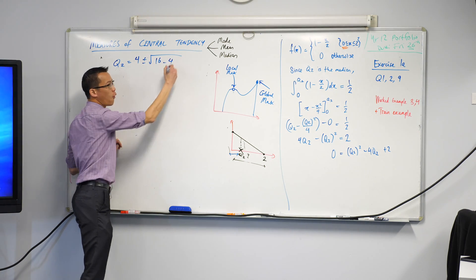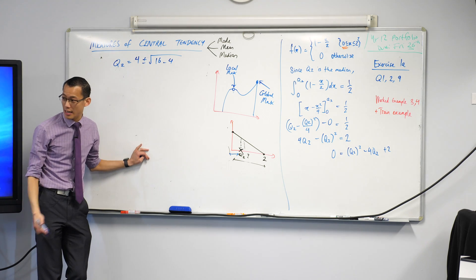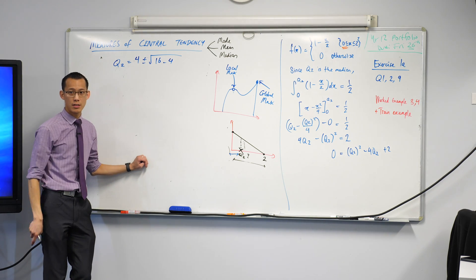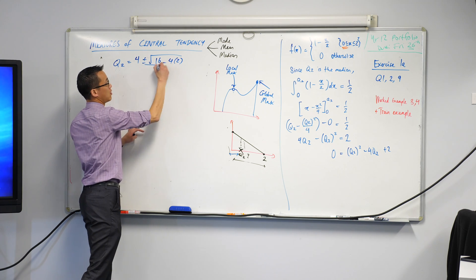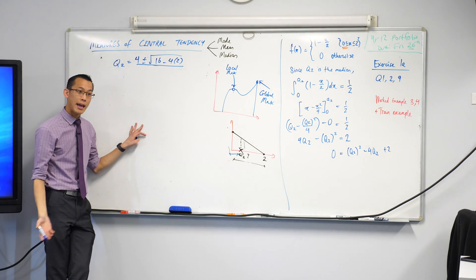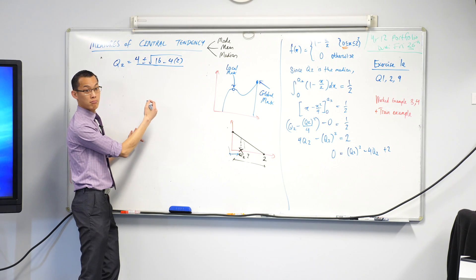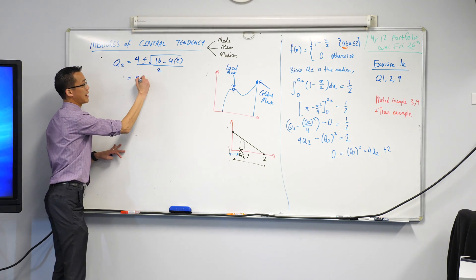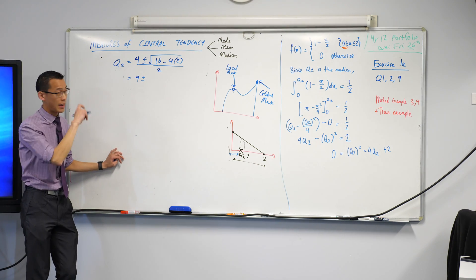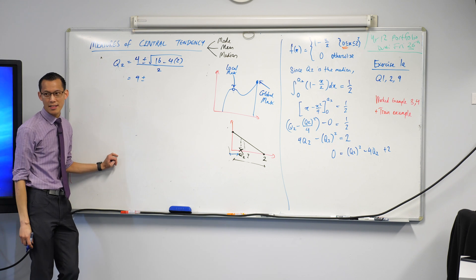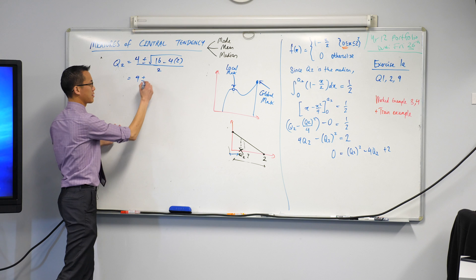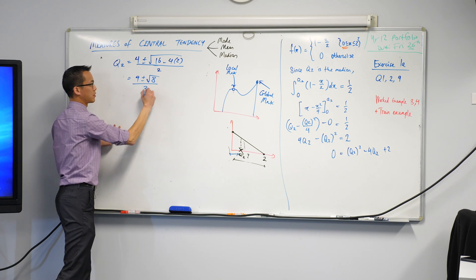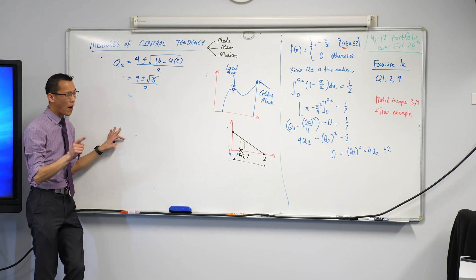B is negative 4, so minus negative 4 is 4. Do you agree with that? There's minus B. Plus or minus the square root of B squared, which in this case is 16, because that's negative 4 squared. Take away 4 AC. What's AC in this case? 1 times 2. So that's 2. All divided by 2A, which in this case is just 2. Okay, stay with me. We can do this. What comes in underneath the square root sign? It's 16 minus 8, which is 8. All on 2.